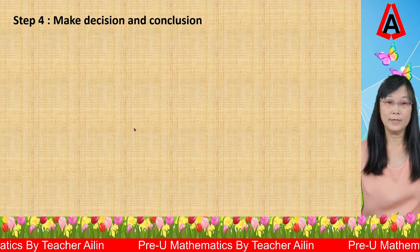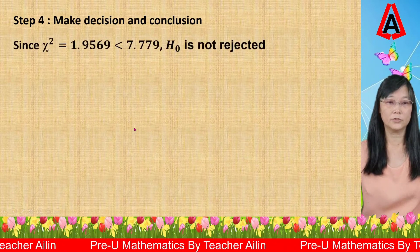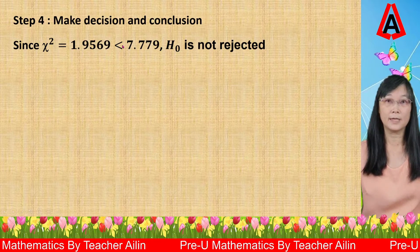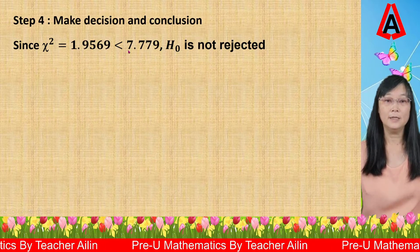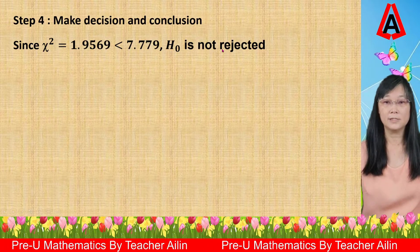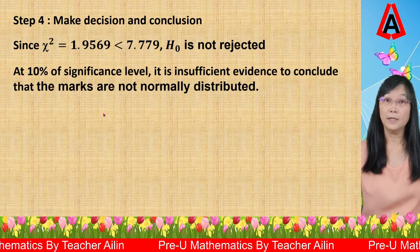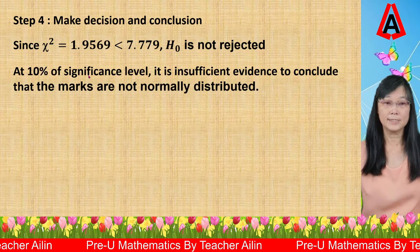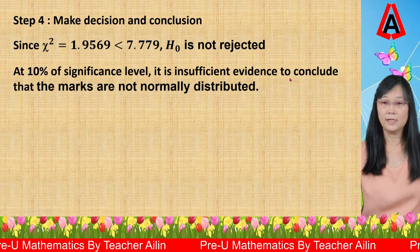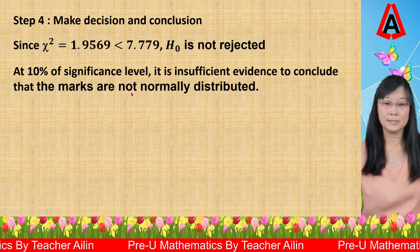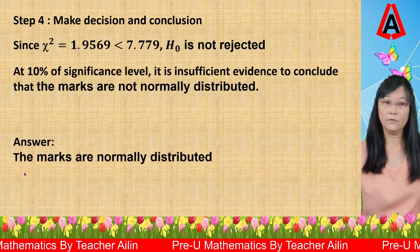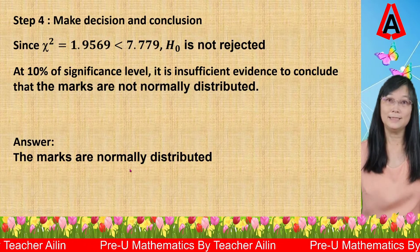Step four: make decision and conclusion. Since the chi-squared value is 1.9569, which is less than 7.779, H₀ is not rejected. We conclude that at the 10% significance level, there is insufficient evidence to conclude that the marks are not normally distributed. Therefore, the marks are normally distributed.